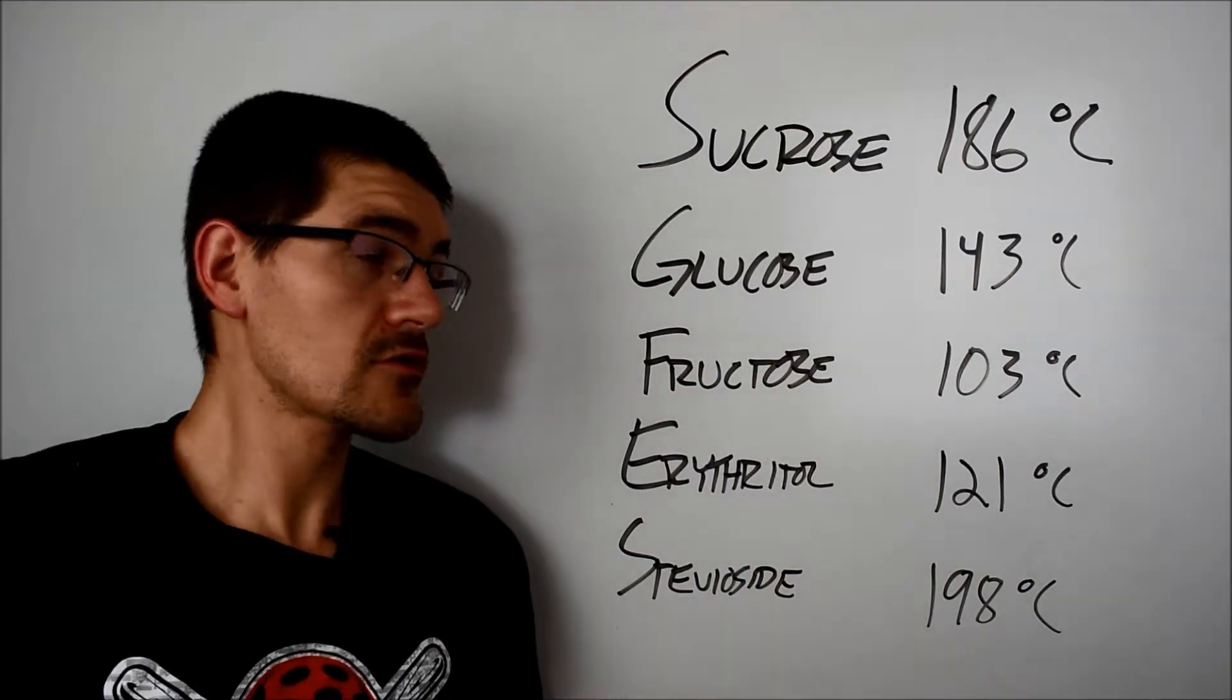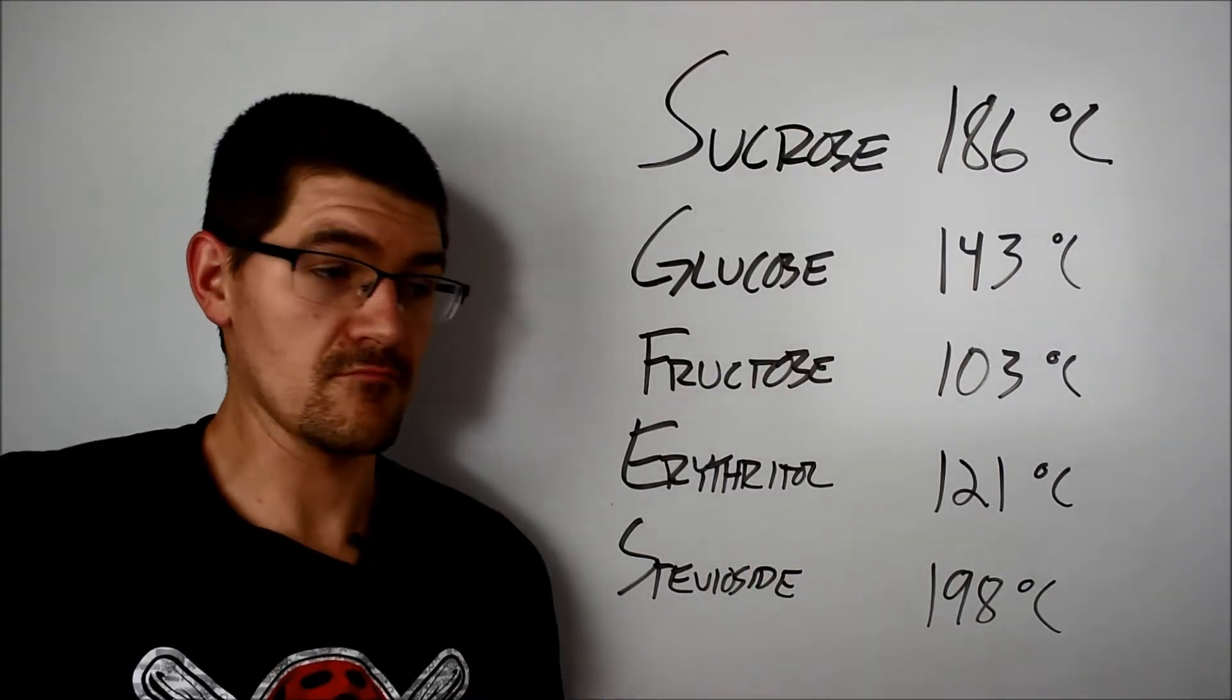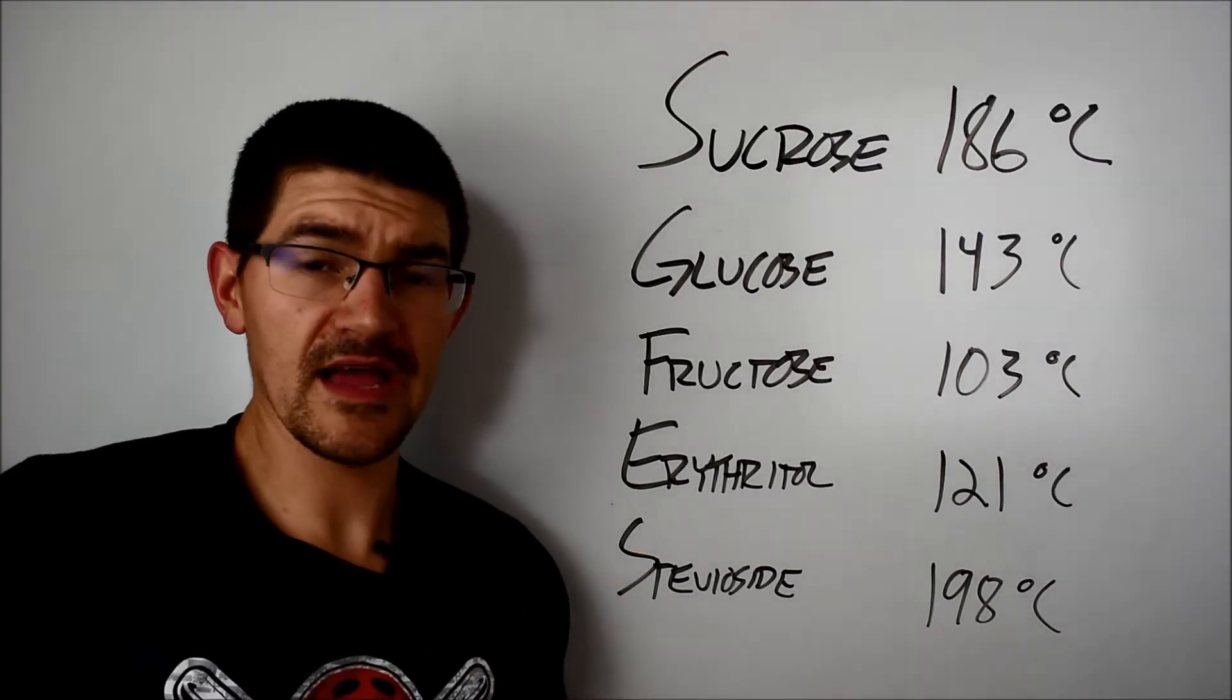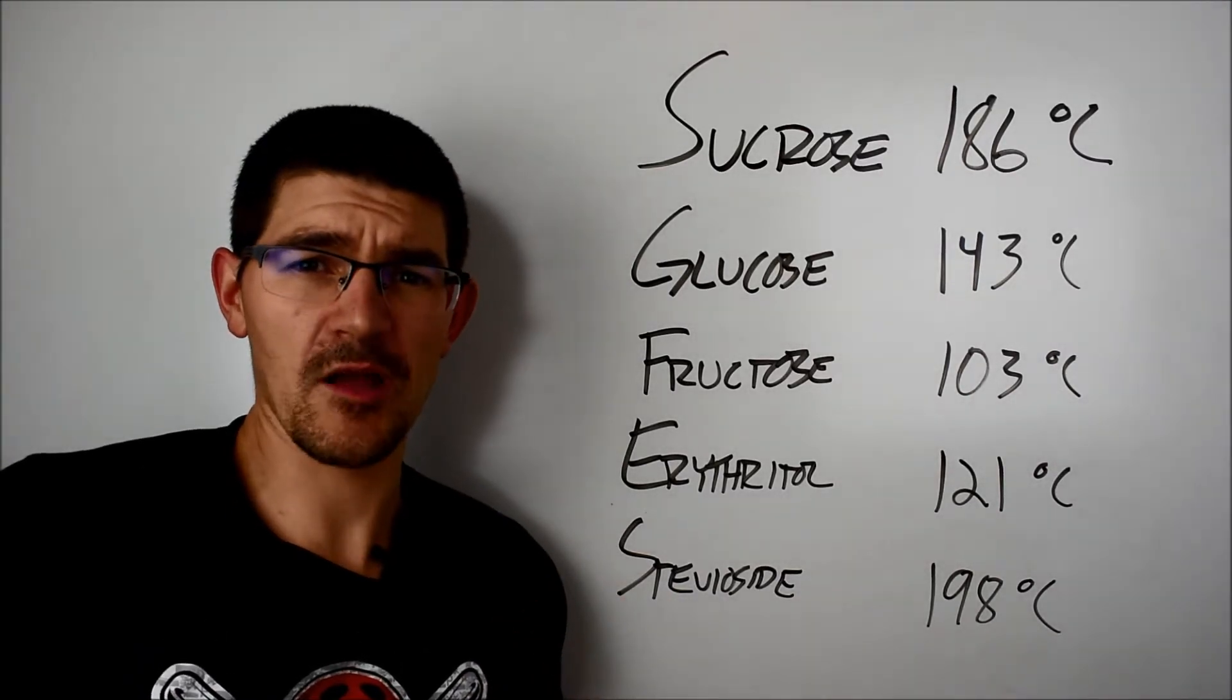And, as you would expect, the glucose basically just caramelizes. You see it turn brown and bubble and then eventually over-caramelize and just turn into a giant black ball of soot.